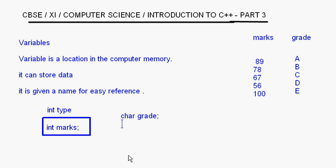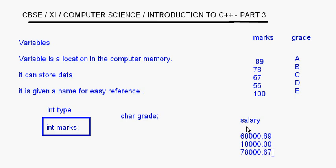Now suppose I want to store the salary of an individual. The salary can be in decimals — for example, 60000.89 or 78000.67. An integer value cannot hold decimals, so I'll use a float variable: `float salary;`. When naming variables, remember you cannot use C++ keywords as variable names.